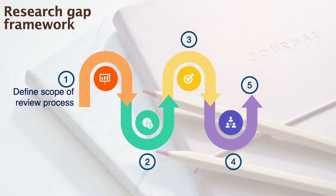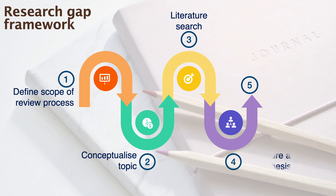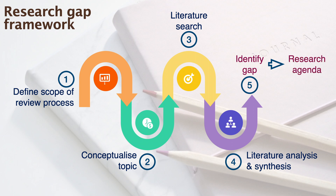These five steps should be useful for the purpose. The initial step is to determine the scope of our review process. Once that is done, we move on to conceptualising the topic, which should include providing the definitions of key terms. Next, we are ready to conduct a search for the literature, followed by performing the analysis and synthesis of selected literature. Finally, we identify the research gaps from the synthesis and develop a research agenda.